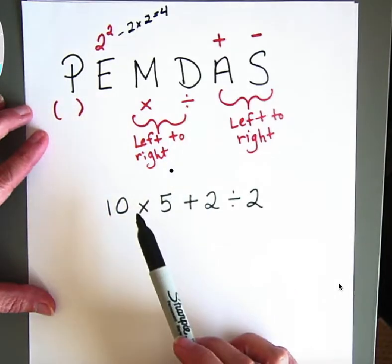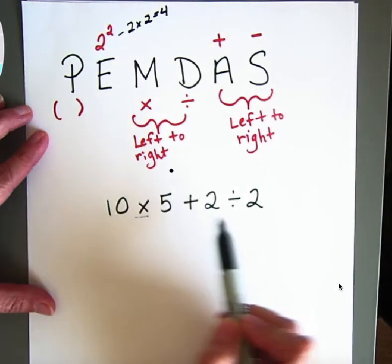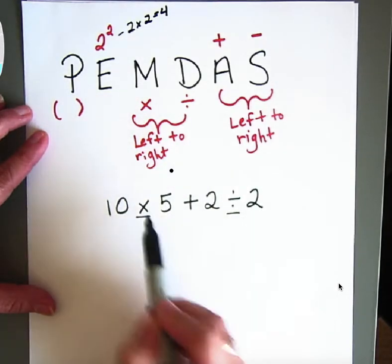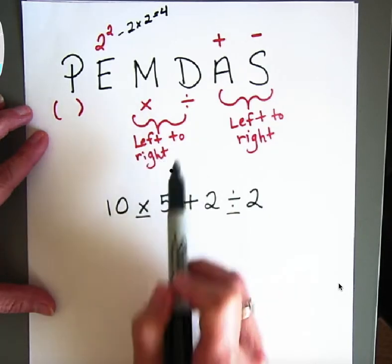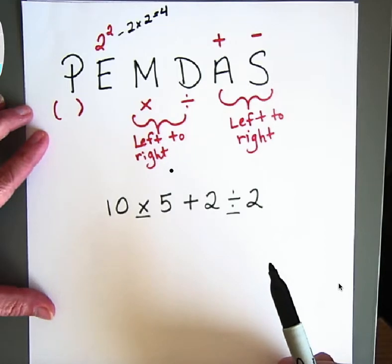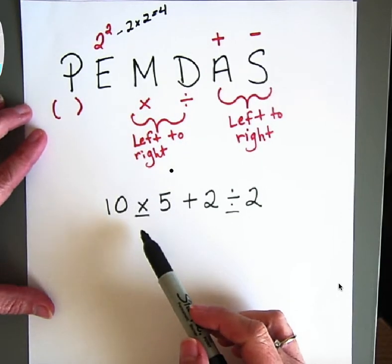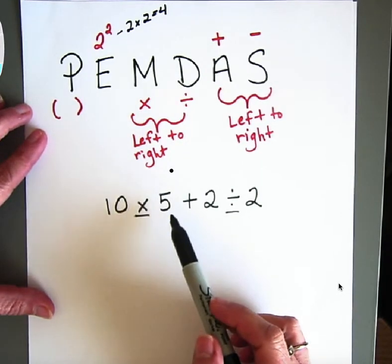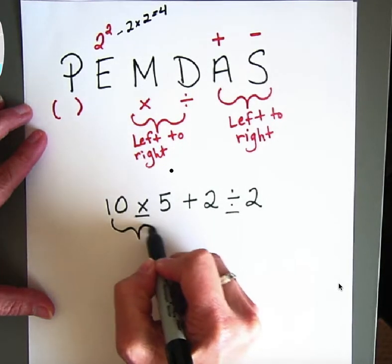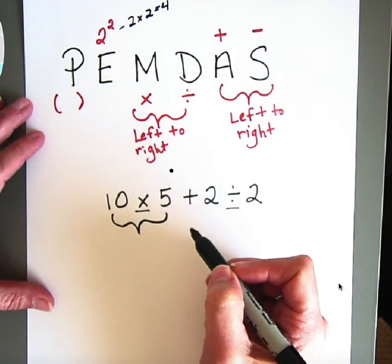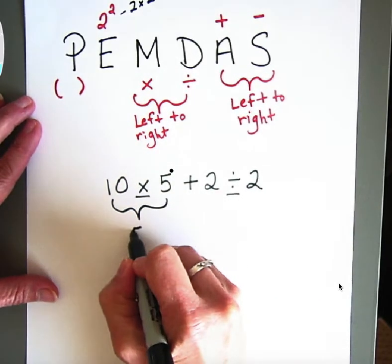Now I do see that I have multiplication and division. So I'm going to go from left to right and do whichever one comes first. So in this particular problem, it's 10 times 5. So I'm going to work on 10 times 5. I'll do that first. So 10 times 5 is 50.